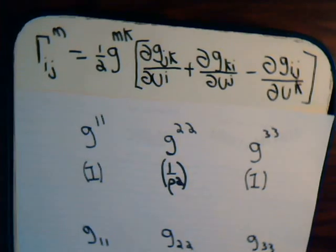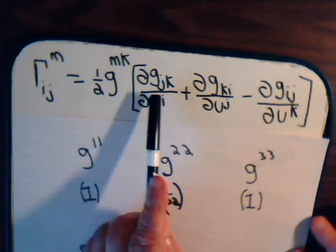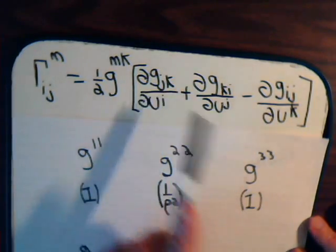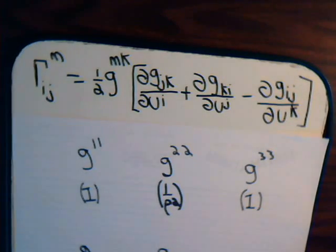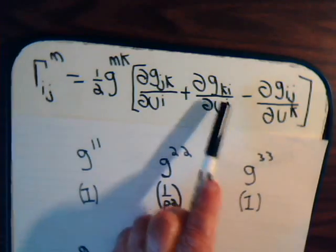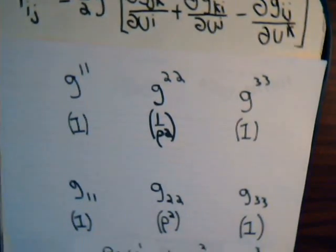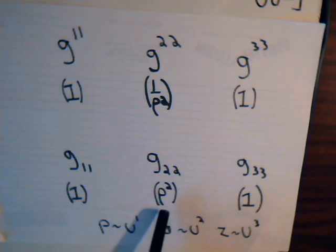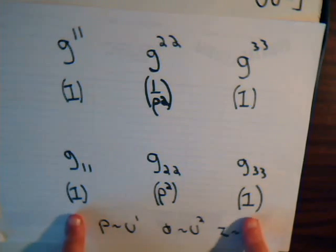So, what this tells us is that for these expressions, the only time that we have a chance where it is not zero is if this is 2, 2, in which case we're taking the partial of rho squared. Otherwise, we're taking the partial of 1, which is zero.